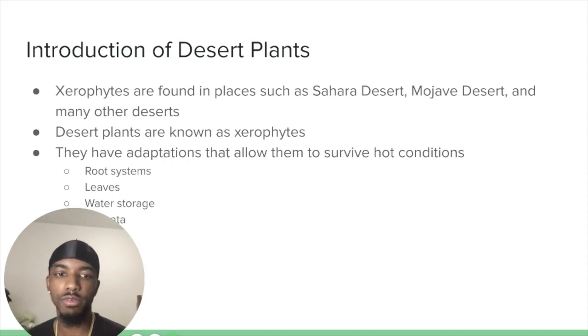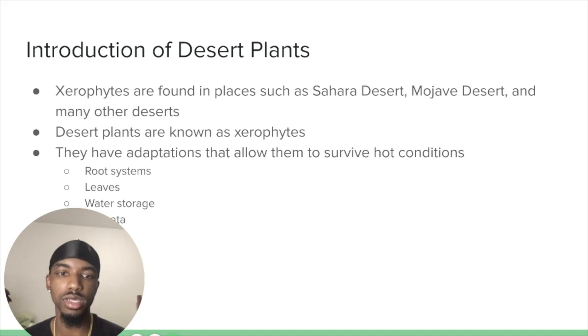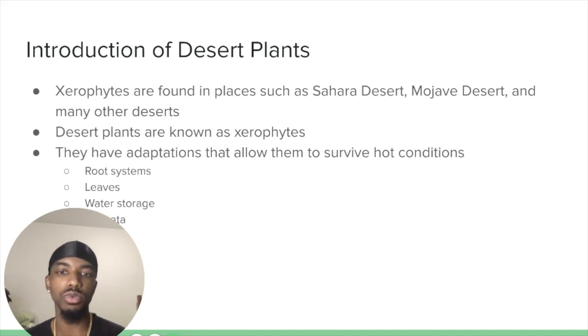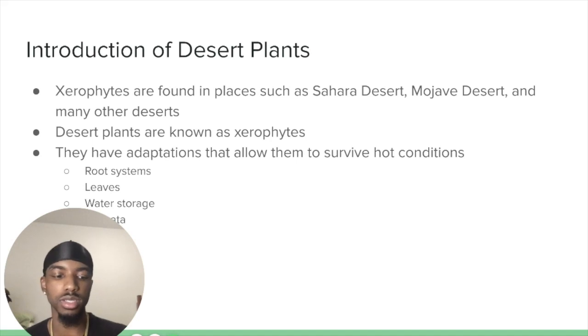In order for desert plants to survive where water is scarce, they have to have certain adaptations, which include root systems, leaves, water storage, and their stomata.